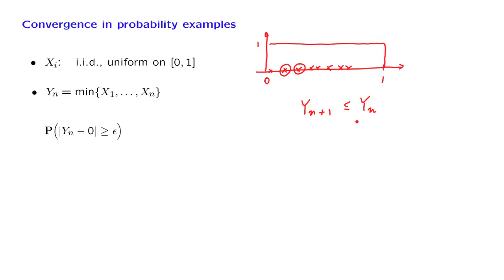To verify that, what we do is we fix some positive epsilon, and we look for the probability that the distance of the random variable Yn from the conjectured limit has a magnitude that's larger than or equal to epsilon. And what we need to show is that this quantity converges to 0 as n goes to infinity, no matter what epsilon is.